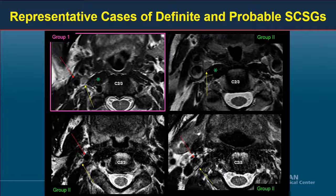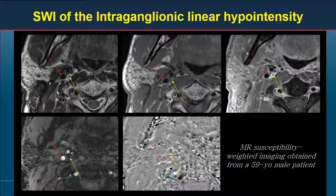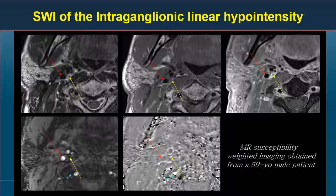Representative cases of definite and probable SCSG are shown. These MR images obtained from four different patients show the typical location as medial to the ICA and lateral to the longus capitis muscle. Among probable SCSG, the most frequent anatomic variation was anterior to the longus capitis muscle, followed by lateral and posterior to the ICA. In more than 90% of the ganglia, intraganglionic linear hypointensity was clearly demonstrated and most conspicuous on contrast-enhanced fat-saturated imaging. Susceptibility-weighted imaging showed intraganglionic linear hypointensity as a marked hypointense focus on magnitude imaging that became hyperintense to the same degree as venous structures on phase images, such as paravertebral venous plexus.